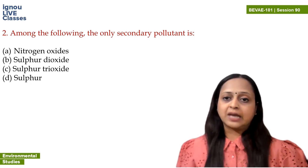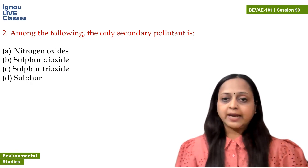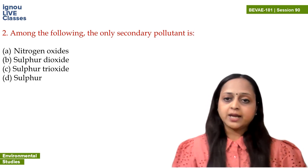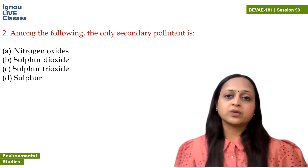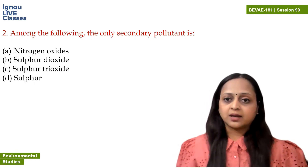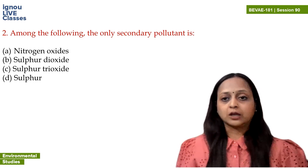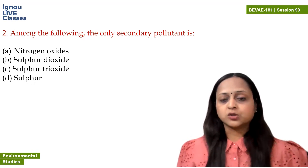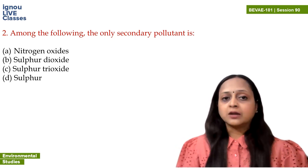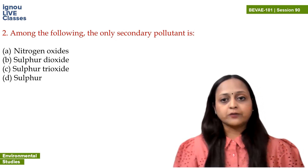If we look at options: nitrogen oxides - when fuel burns, oxides of nitrogen are released, including nitrous oxide (N2O), nitric oxide (NO), and nitrogen dioxide (NO2). These three main oxides of nitrogen have direct sources from burning of fuel in industries or vehicles, so they are primary air pollutants. Sulfur dioxide (SO2) is also a primary air pollutant, released from burning of fuel.